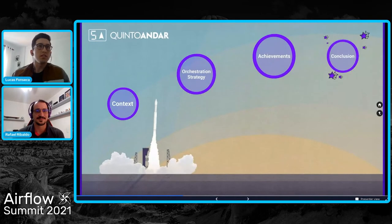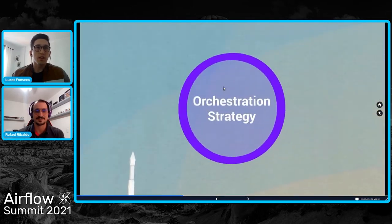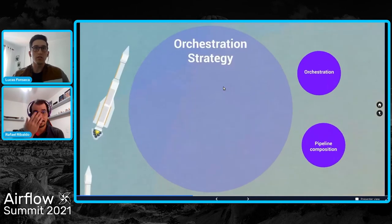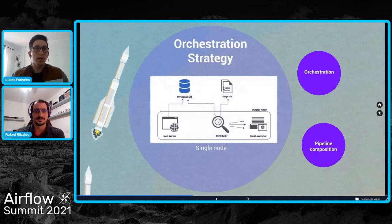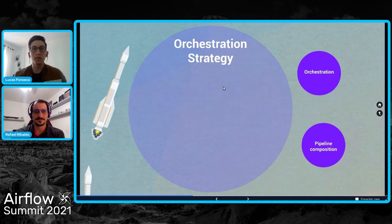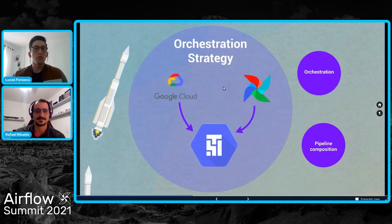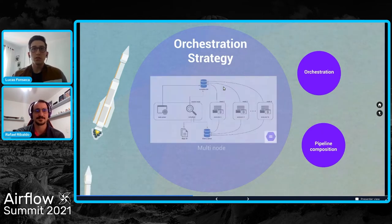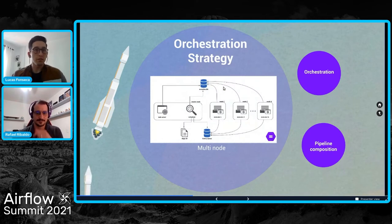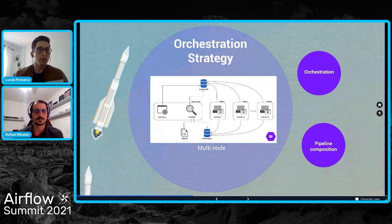I'm Lucas, I'm a data engineer here at QuintoAndar, and let's talk about our orchestration strategy. As Rafael said, we rethought our whole data ecosystem here at QuintoAndar, and consequently our Airflow architecture. We moved from a single instance and adopted the multi-node approach using Google Cloud Composer on GCP. This distributed approach gives us more power to process a bigger number of jobs in parallel, meaning improved capacity to support the expected growth of our company and consequently the growth of our data platform.